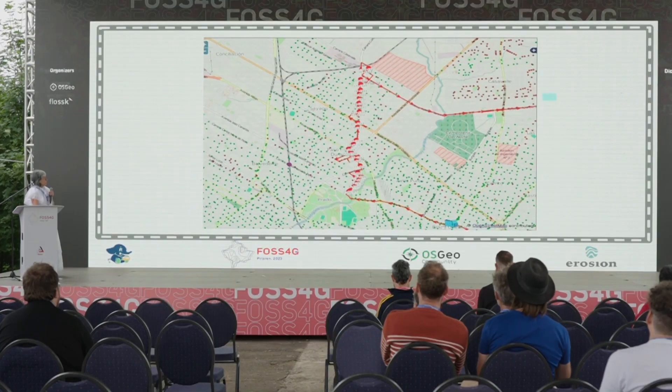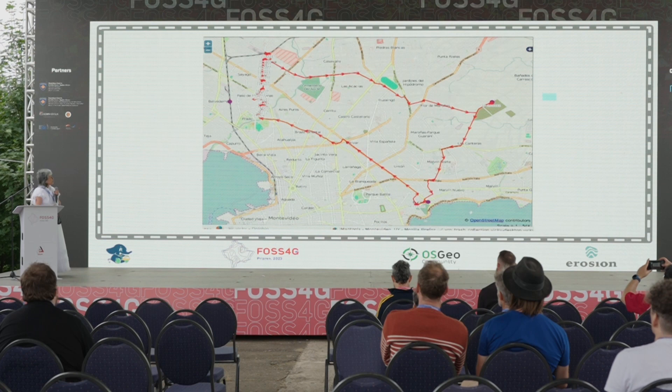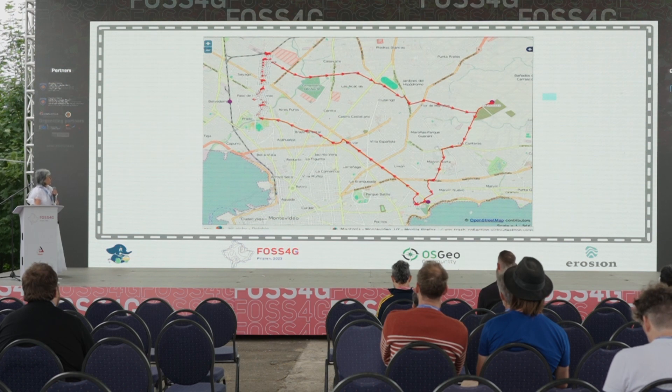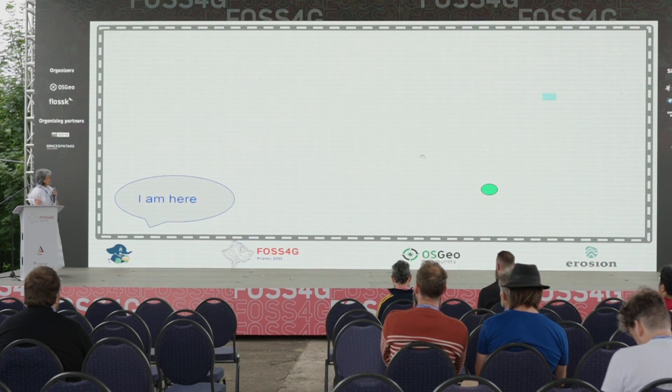Vehicle routing problems include things like garbage collection. Here you can see a garbage truck operating in Montevideo, where all the green dots are containers. The trucks had to find and pick up those containers, and for a fleet of trucks we needed to find the smallest set of routes. The truck fills up, goes to the dump, returns to the depot, maybe to change drivers, then goes back out. That's a vehicle routing problem solvable with VRP routing.